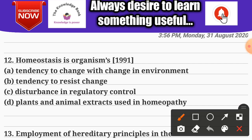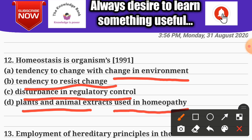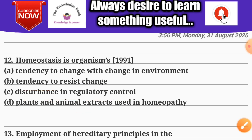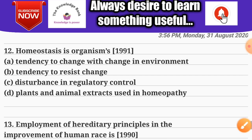Question number twelve: homeostasis is an organism's — Options: A) tendency to change with change in environment; B) tendency to resist change or disturbance in regulatory control; C) plants and animal extracts used in homeostasis and homeopathy. The correct answer is B — tendency to resist change.